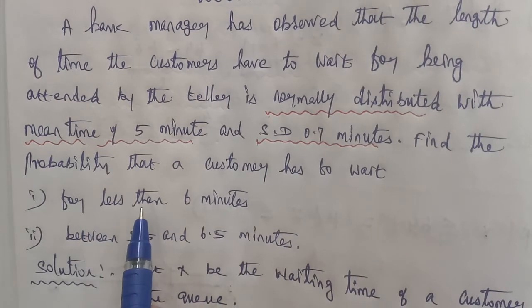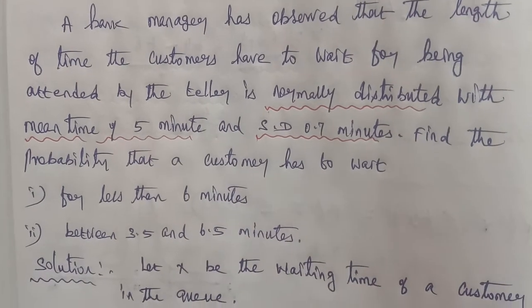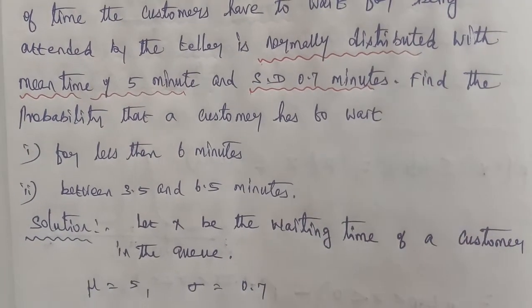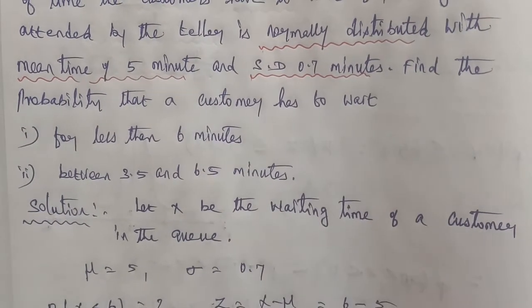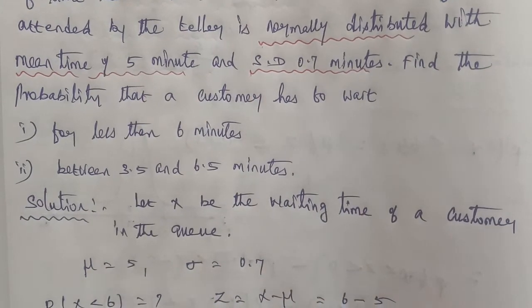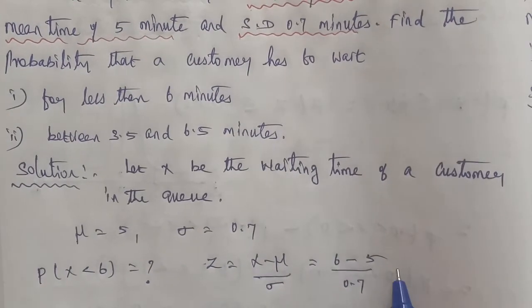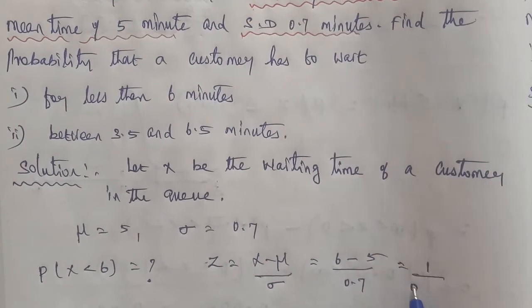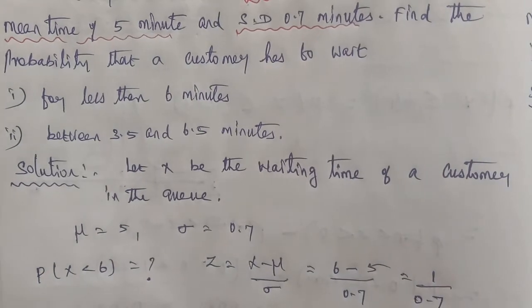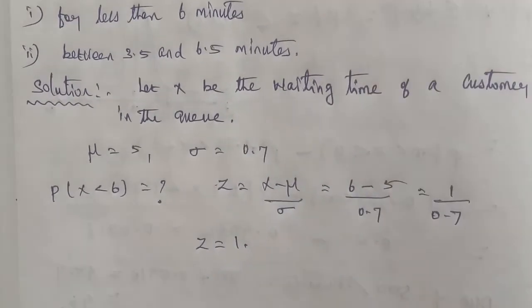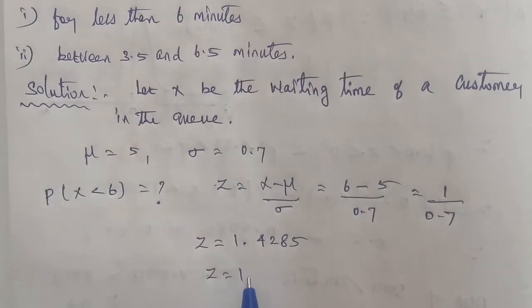For part one, we need to find the value for less than 6 minutes, that is P(X < 6). The formula for normal distribution is Z = (X - μ) / σ. The X value is 6, substituting we get Z = (6 - 5) / 0.7. After dividing, 1 divided by 0.7 gives 1.4285, which we round off to Z = 1.43.